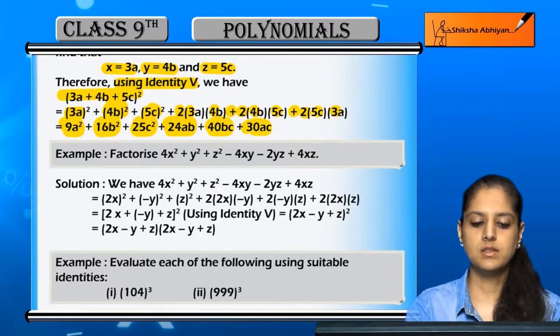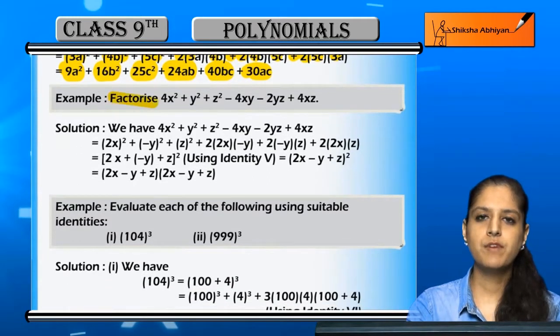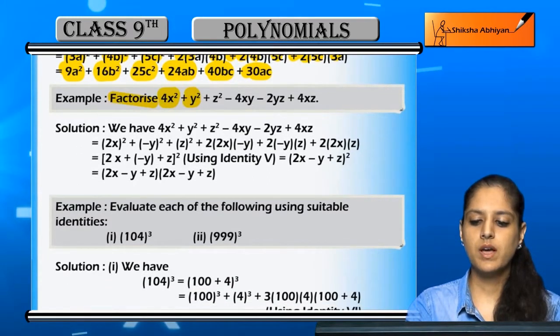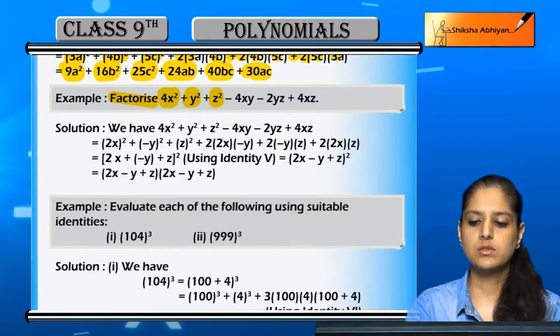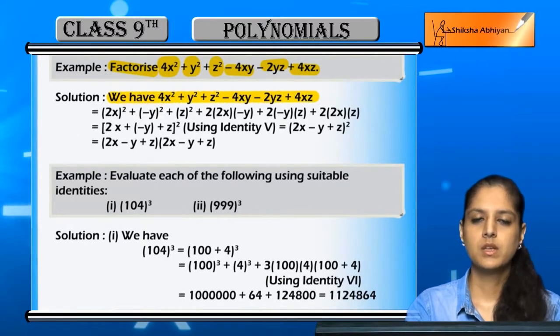Now we have to factorize 4x² + y² + z² - 4xy - 2yz + 4xz. We can write this in compressed form.